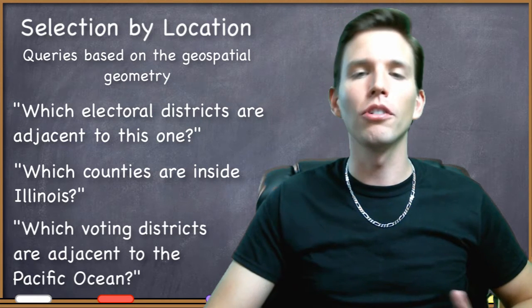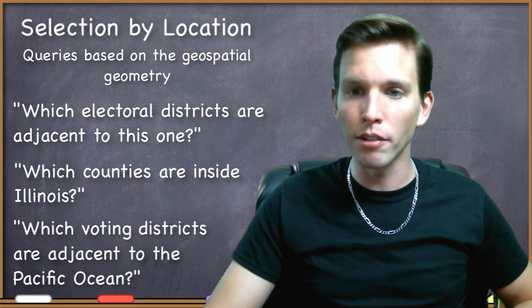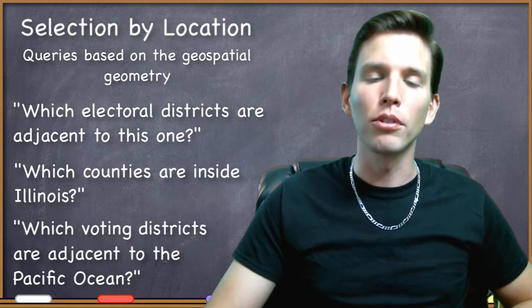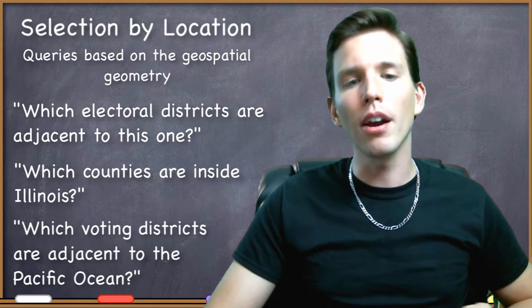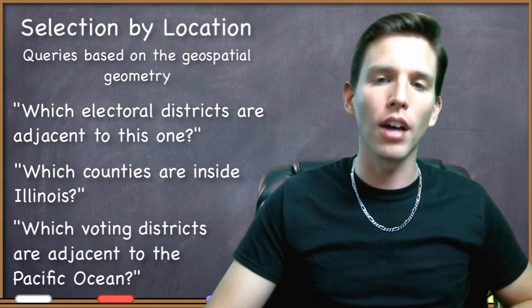Sometimes we'll be looking at the geometric relationships between features within a single data file, but often we'll be comparing the geometric relationships between features in two or more files. When you compare selection by attribute and selection by location, you're going to notice a couple of things.